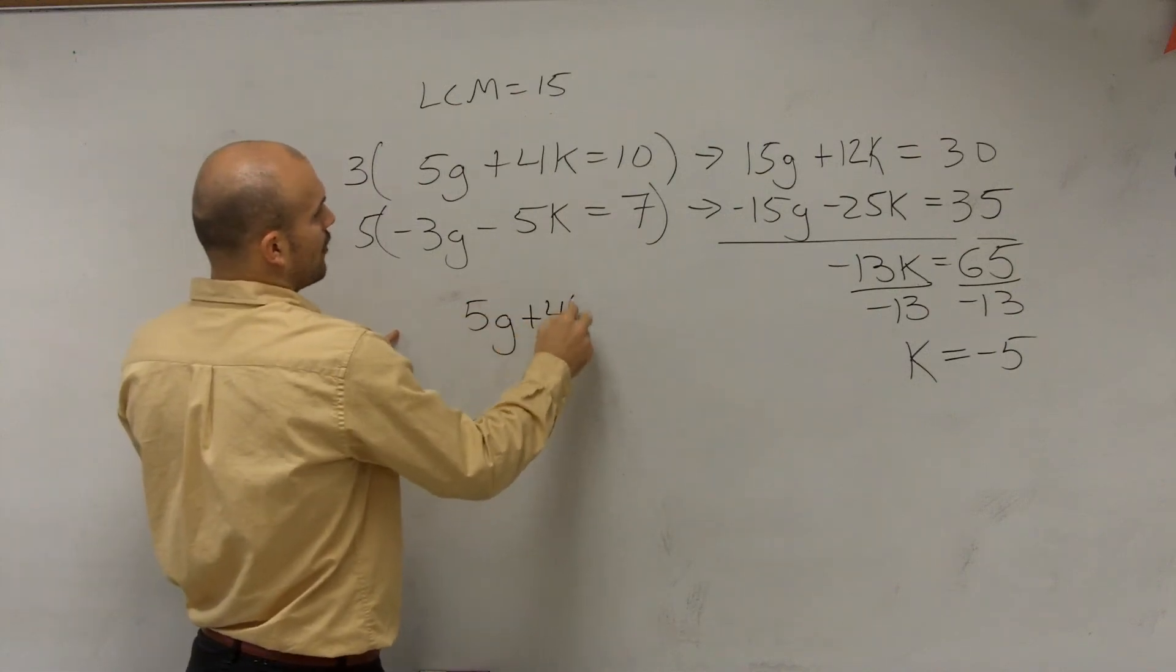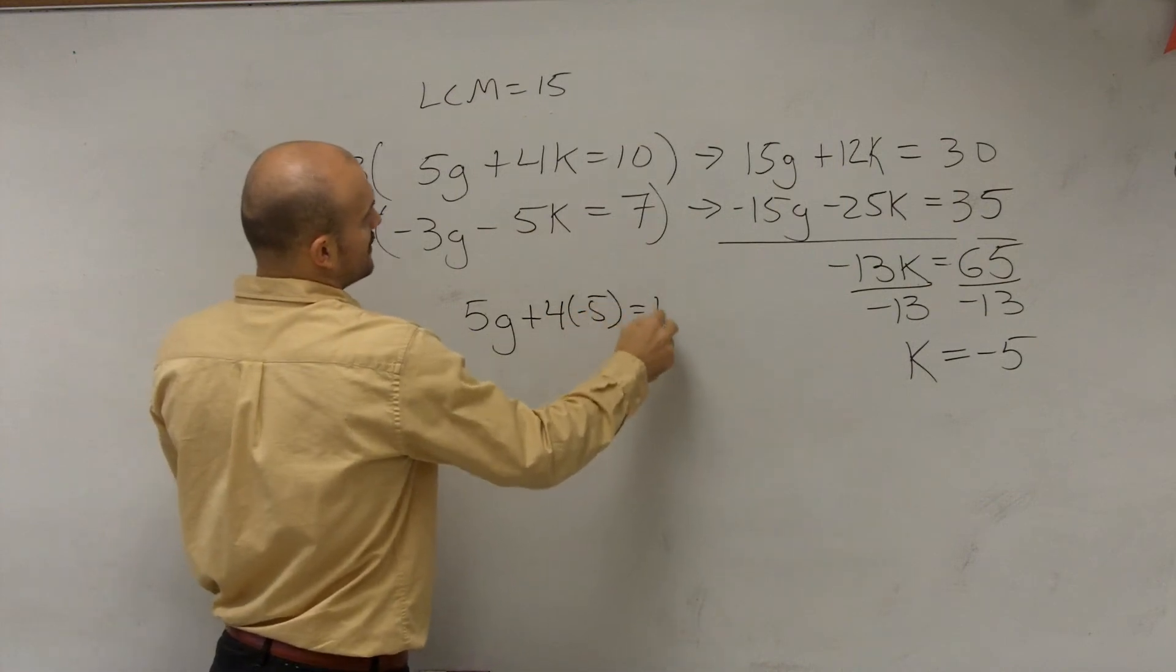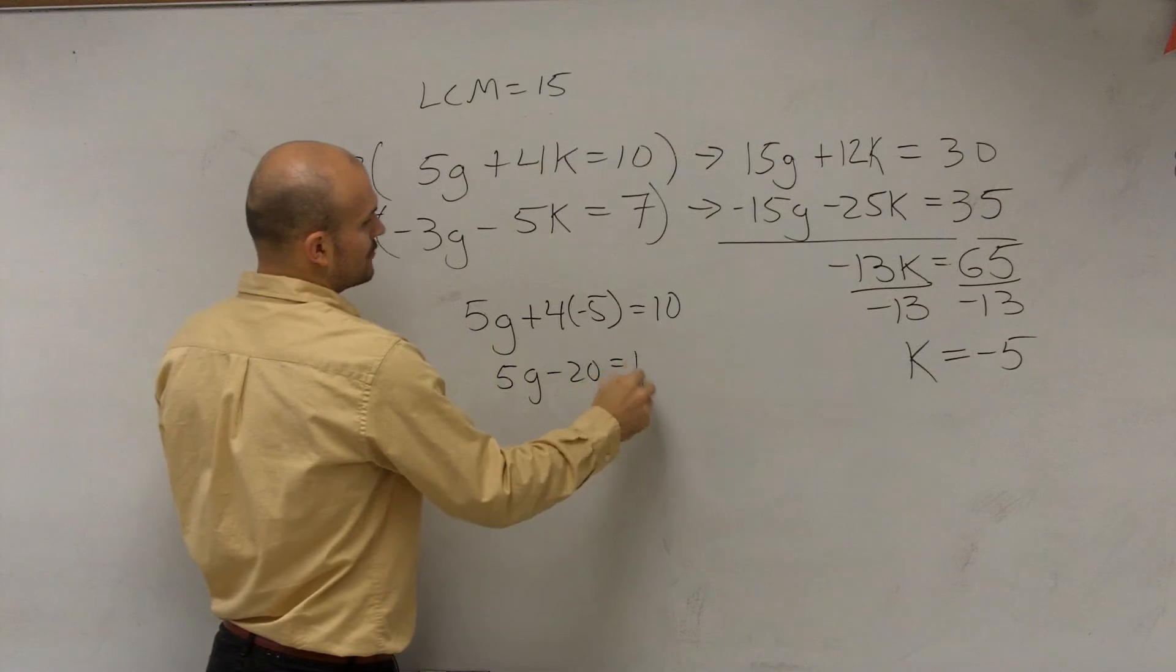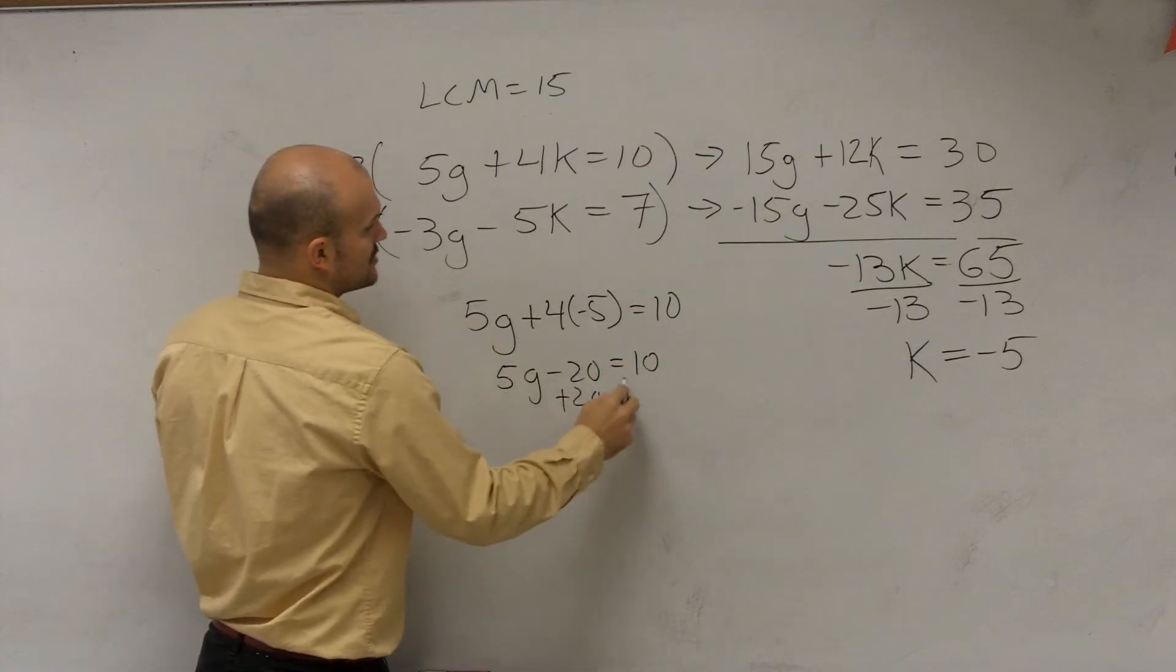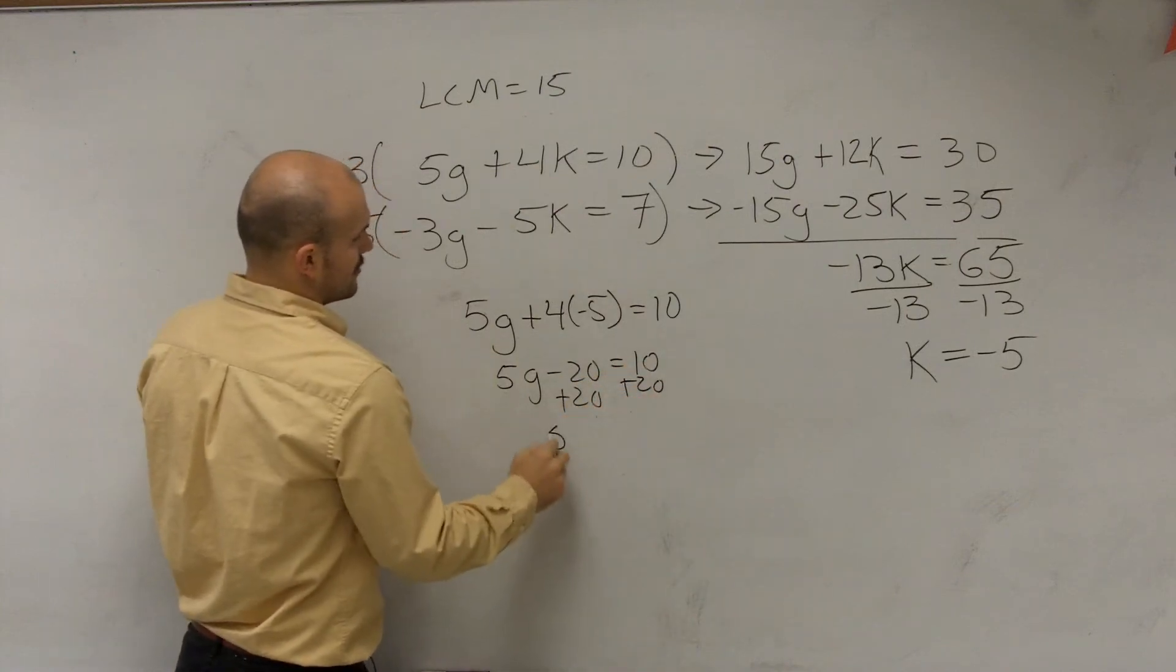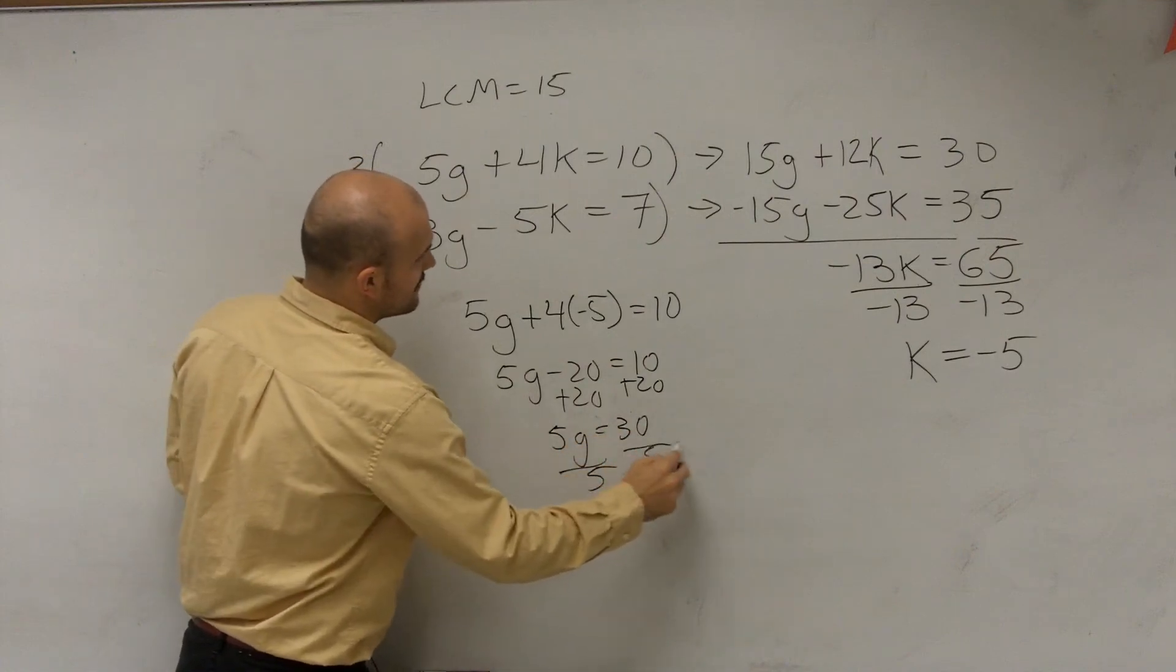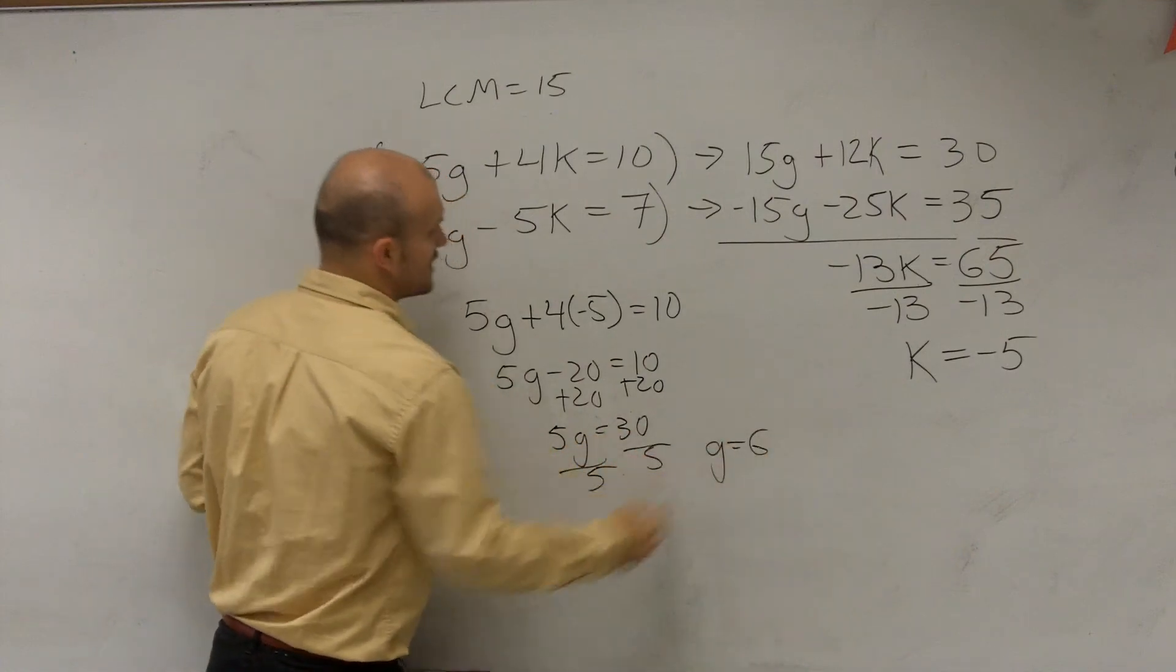So 5g plus 4 times negative 5 equals 10. 5g minus 20 equals 10 plus 20 on both sides. 5g equals 30. Divide by 5. g equals 6.